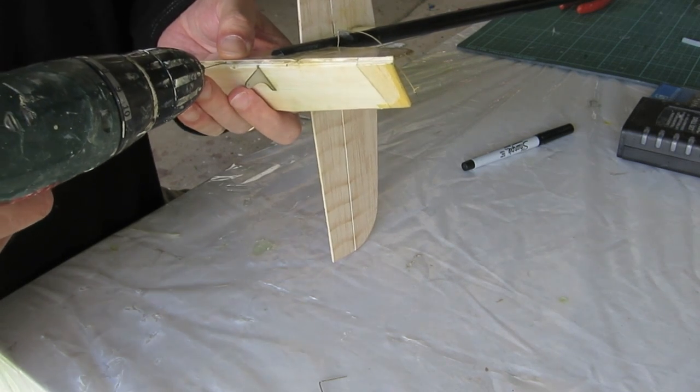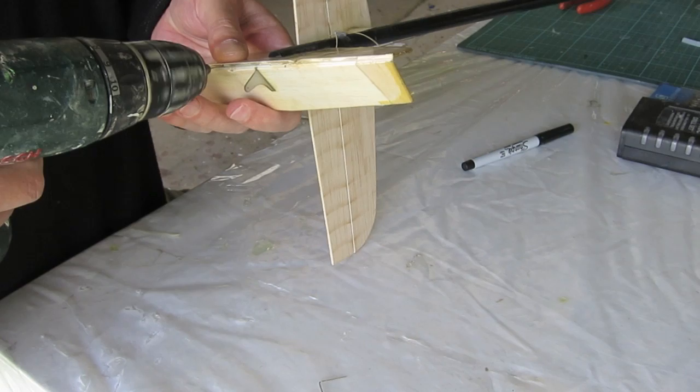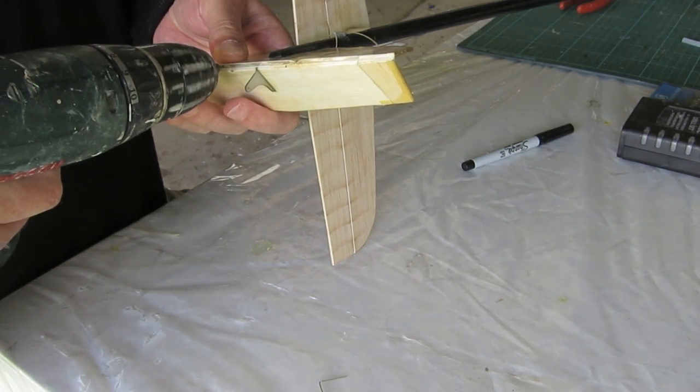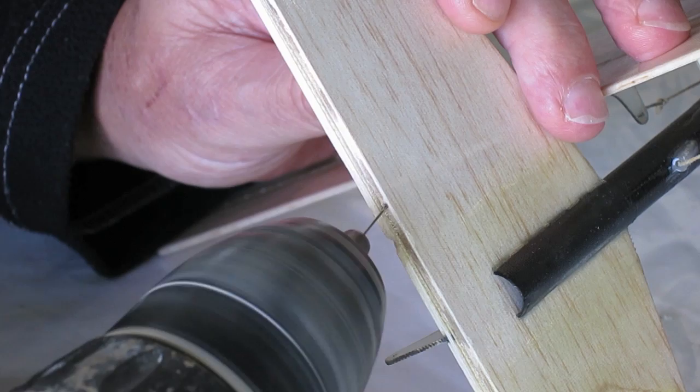You have to be careful when you're drilling here so you don't go out through the sides of the balsa. And I'm using another piece of the 0.4mm wire to drill the hole.